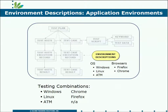Test plans allow you to create and manage the different environment combinations that describe where your application can run. In this case, we have an application that can run on Windows or Linux, with browsers either Firefox or Chrome, and can also run on the bank ATM machines. This could describe a fairly large number of environments. You could do every possible combination, or as shown at the bottom of this slide, the decision was made to test on Windows running Chrome, on Linux running Firefox, and on the ATM machines — not a full combination, but sufficient.